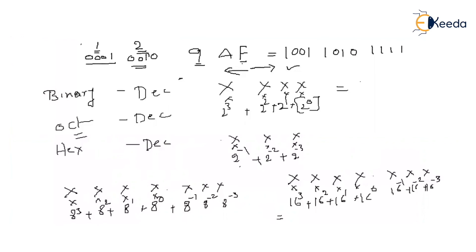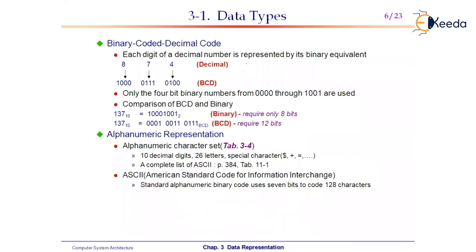This is how you convert hexadecimal to binary data types. We have discussed number systems; now we need to analyze data types. These data types are required by the computer system for signal processing. We will discuss signal processing and how data formats are helpful in that context.